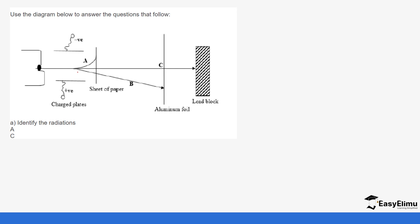Let's look at this question: use the diagram below to answer the questions that follow. We have the source of radiation — A is stopped by a sheet of paper, B is stopped by an aluminium foil, and C is stopped by a lead block. So identify the radiation: A is alpha radiation, B is beta radiation.